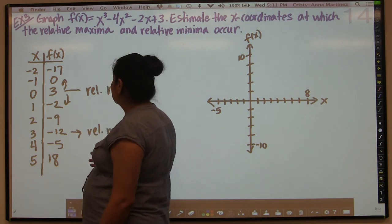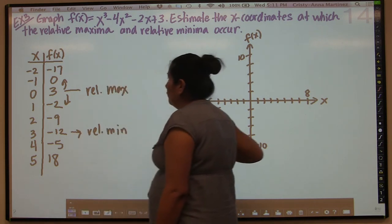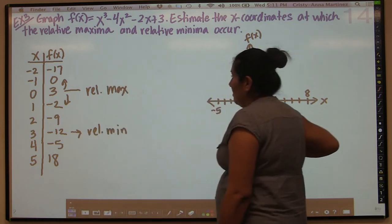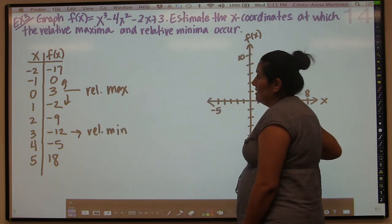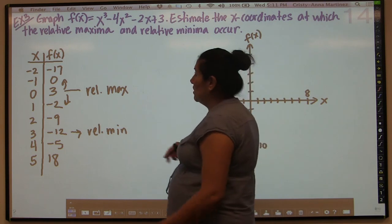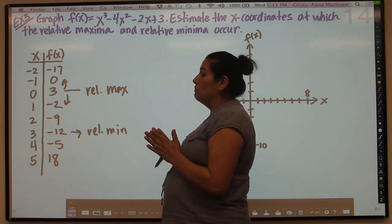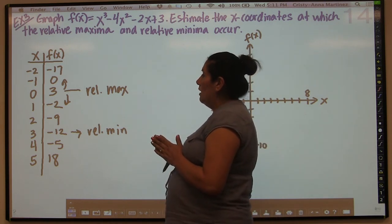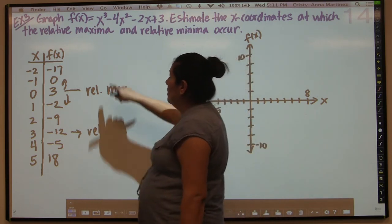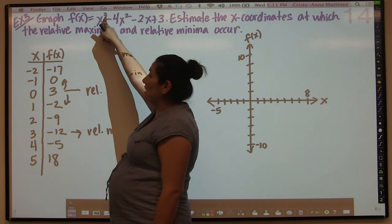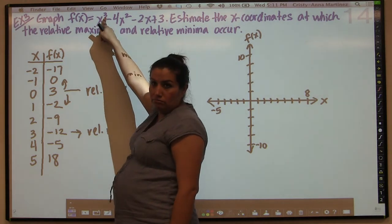We also have a rule of thumb that tells us you cannot have more turning points than the degree minus 1.